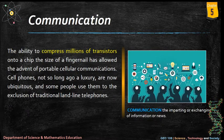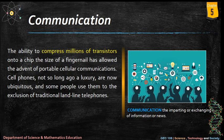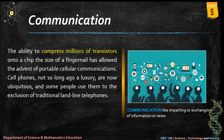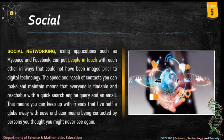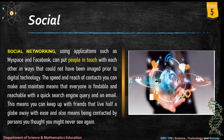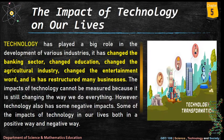Communication: the ability to compress millions of transistors onto a chip the size of a fingernail has allowed the advent of portable cellular communications. Cell phones — not so long ago a luxury — are now ubiquitous, and some people use them to the exclusion of traditional landline telephones. Communication is the imparting or exchanging of information or news. Social networking using applications such as MySpace and Facebook can put people in touch with each other in ways that could not have been imagined prior to digital technology. The speed and reach of contacts means everyone is findable and reachable — you can keep up with friends half a globe away.